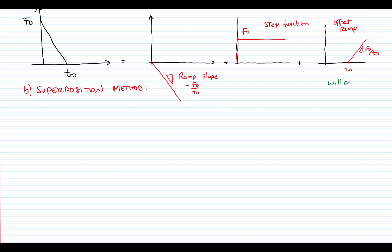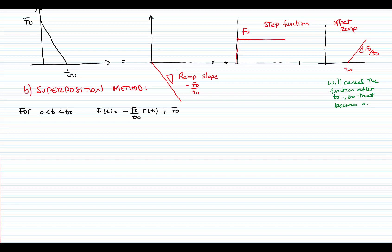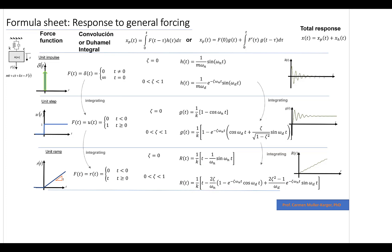For 0 < t < t₀, the function is a negative ramp of slope f₀ / t₀ plus a step function of magnitude f₀. The response combines the known response of a ramp (R(t)) and the known response of a step function (G(t)), which I will look up from my formula sheet.